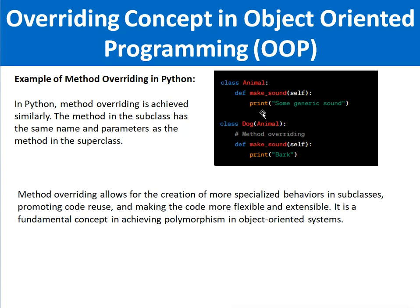Method overriding allows for the creation of more specialized behaviors in subclasses — meaning child classes or extended classes which extend from the base class — promoting code reuse and making the code more flexible and extensible. It is a fundamental concept in achieving polymorphism in object-oriented programming. If you want to learn OOP, you must understand the overriding concept, through which you can reuse code and make your code more flexible. Thank you for watching the video; I hope you liked it — please share it with friends and colleagues.